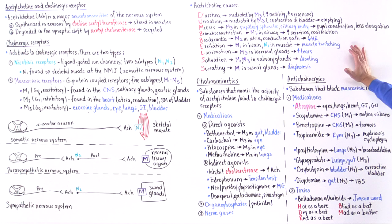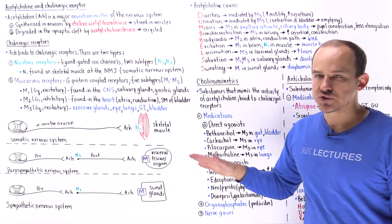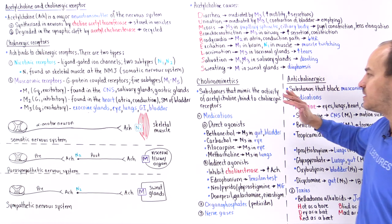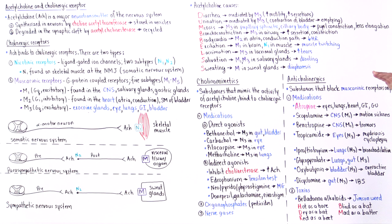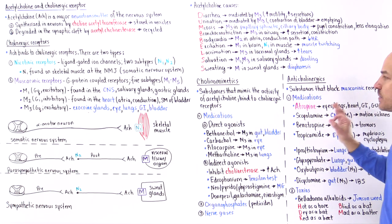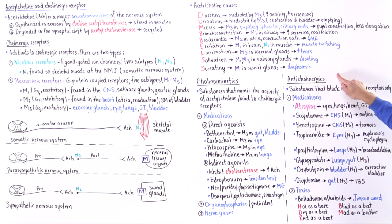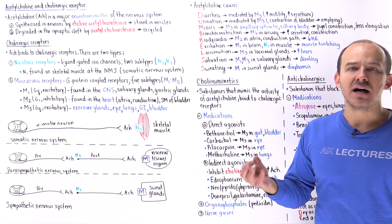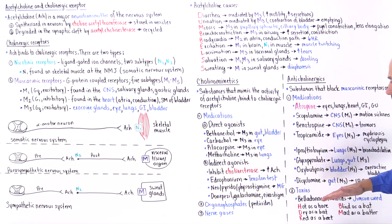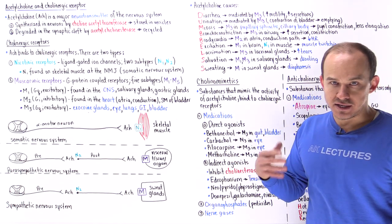Anticholinergics do the opposite of cholinomimetics — they block the activity of cholinergic receptors, but they only work on muscarinic receptors. They don't actually work on nicotinic receptors. For this reason, we also call anticholinergics muscarinic antagonists. We have medications and toxins.